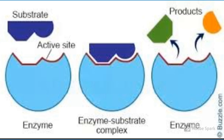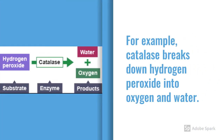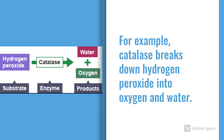The enzyme then splits the substrate to form separate products. For example, catalase — the enzyme I spoke about before — breaks down hydrogen peroxide (the substrate) into oxygen and water (the products). The diagram might give you a better idea of what I'm talking about.